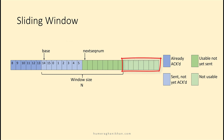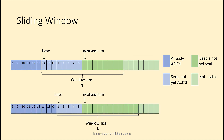The light color region cannot be used until acknowledgements of some previously sent packets arrive and the window slides. In this next example, the window has slid — acknowledgements of packets 14, 15, and 0 have arrived. Now it has more places available. If the upper layer gives some packets, it can immediately send them on the transmission channel and keep a copy in the buffer until acknowledgements arrive.